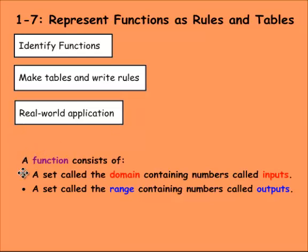First, what is a function? A function consists of a set called a domain, containing numbers called inputs. Domain are the inputs. And then there's a range, containing numbers called the outputs. So there's an input followed by an output, and there's a relationship there.